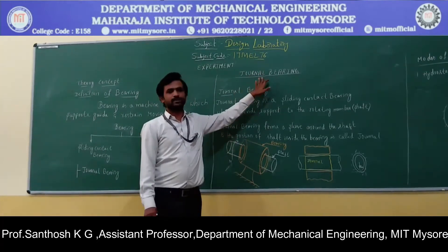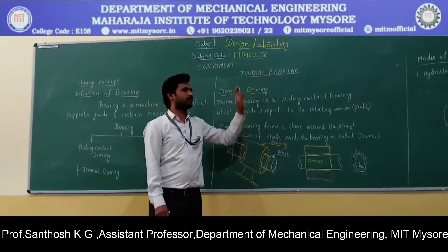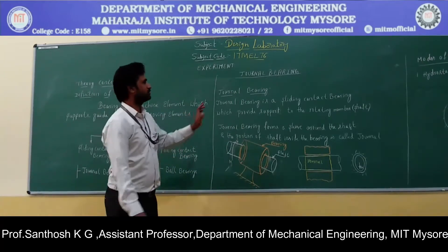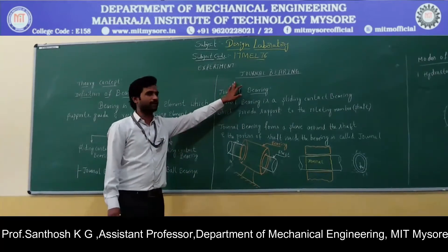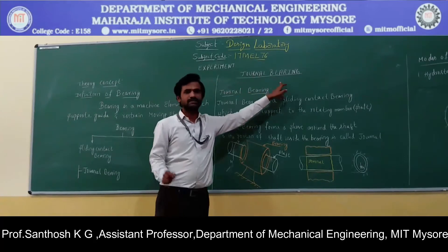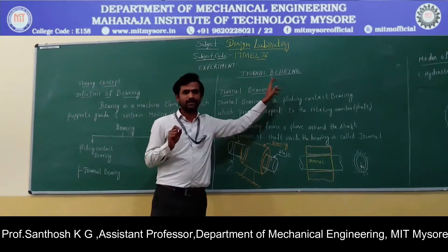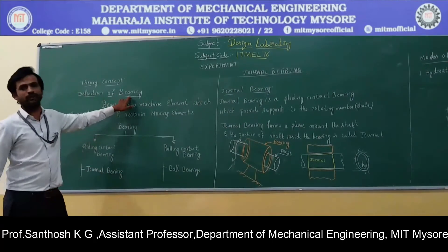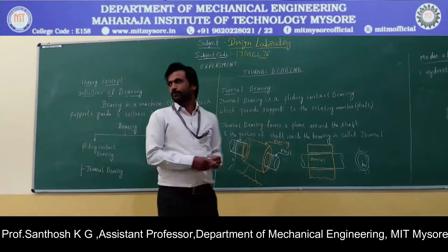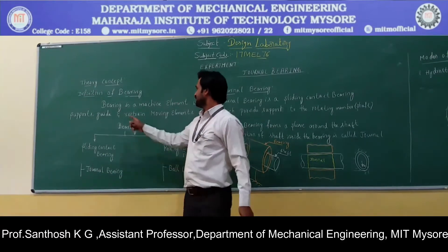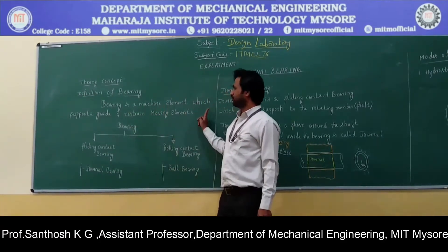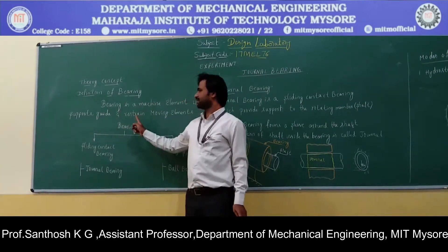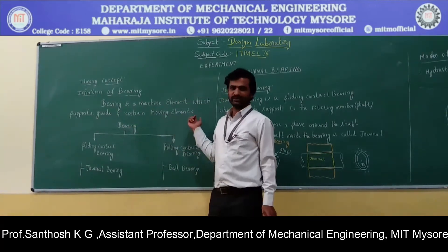Before going to the experiment, first let us learn some of the theory concepts related to journal bearing. Since a journal bearing is a type of bearing, first we should know the definition of a bearing. A bearing is a machine element which can be used to support, guide, and restrain the moving elements.